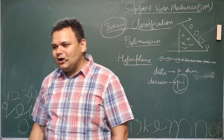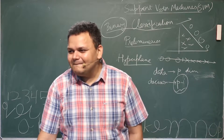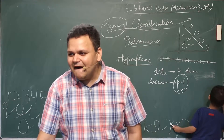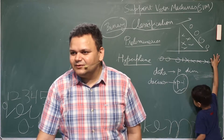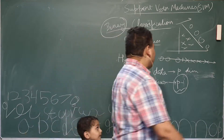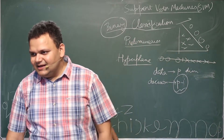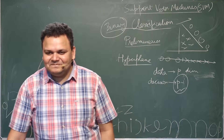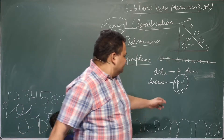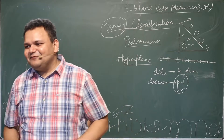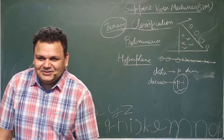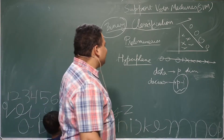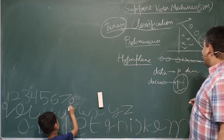If we had a 3D data and we talk about a linear decision boundary, what would it look like? It would be a plane. So we call this particular p minus one dimensional structure a hyperplane. It comes from the word 'plane.' In the case of three-dimensional data, the decision boundary is a two-dimensional plane.